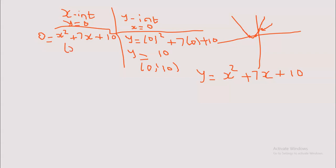I'll just factorize this one. So we get two x factors: (x + 5)(x + 2), because 5 times 2 gives 10 and 5 plus 2 gives 7. So the factored form is (x + 5)(x + 2) equals 0. When you equate each factor to zero the sign changes, so the answers will be x equals negative 5 and x equals negative 2. These are my two x-intercepts: minus 5 and minus 2.